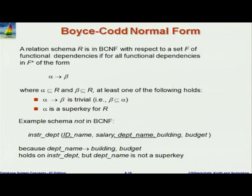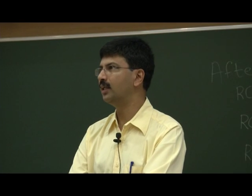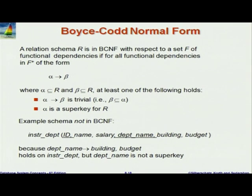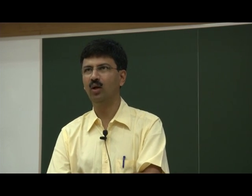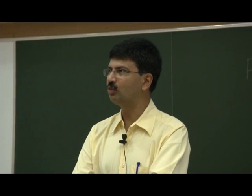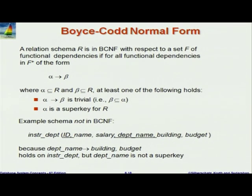What is Boyce-Codd Normal Form? A relation is in BCNF with respect to a particular set of functional dependencies F if, for all functional dependencies in F+, at least one of the following holds: either alpha → beta is trivial (beta is a subset of alpha), or alpha is a super key.